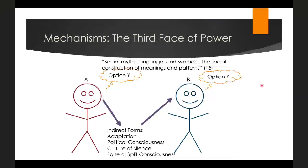Gaventa also argues that ideological power can happen in indirect forms. This usually occurs not by A actively influencing cultural values, but through B internalizing dominant ideology after a series of political defeats — adapting their political preferences and values to the dominant group so they can participate in politics, or developing a sense of exclusion and withdrawing from politics altogether. Gaventa calls this a culture of silence — powerlessness and repeated loss in the political arena means people don't even conceive of their grievances as grievances anymore. This can create false consciousness (as in the Marxist account) or split consciousness as developed by W.E.B. Du Bois and other critical race theorists — where people are unable to articulate their interests outside the dominant conception.